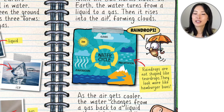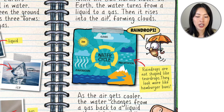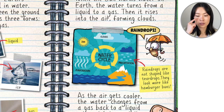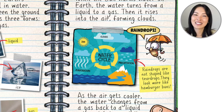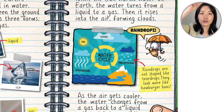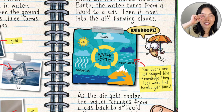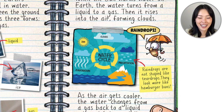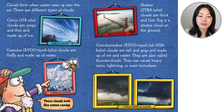Raindrops, points out Fly Guy, are not shaped like tear drops. They're more like hamburger buns. That's a fun fact, because when I draw rain I make them into tear shapes. But when they're falling, they're actually kind of falling flat like this. Hamburger rain.